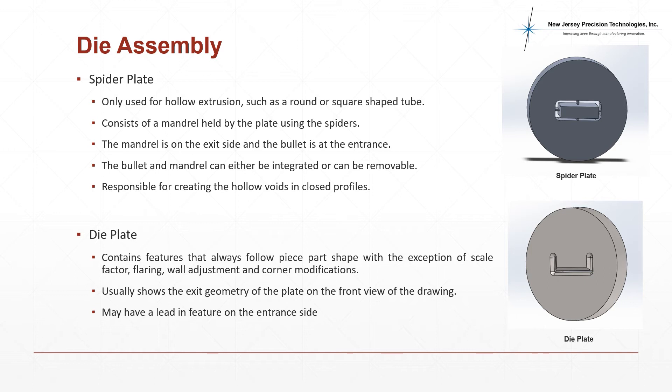The die plate is the most important plate since it has the responsibility of accounting for undesirable post-extrusion phenomenon and forming the polymer melt into its final desired geometry. The exit geometry of this plate will have adjustments to its profile wall thickness, drawdown adjustments, amongst many others. A lead-in feature can usually be found at the entrance of the die plate which improves flow of the polymer from the transition plate into the die plate.